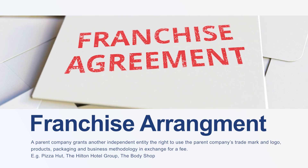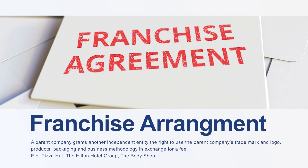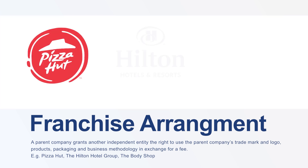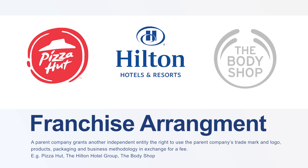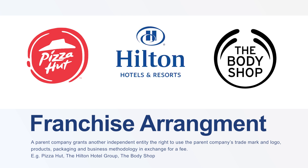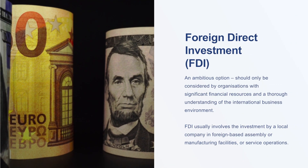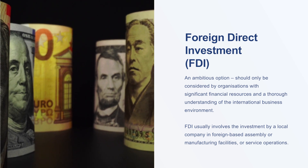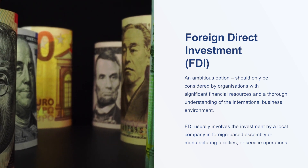Under a franchise arrangement, a parent company grants another independent entity the right to use the parent company's trademark and logo, products, packaging, and business methodology in exchange for a fee. Examples of international franchises operating in SACU member countries are Pizza Hut, the Hilton Hotel Group, and The Body Shop.